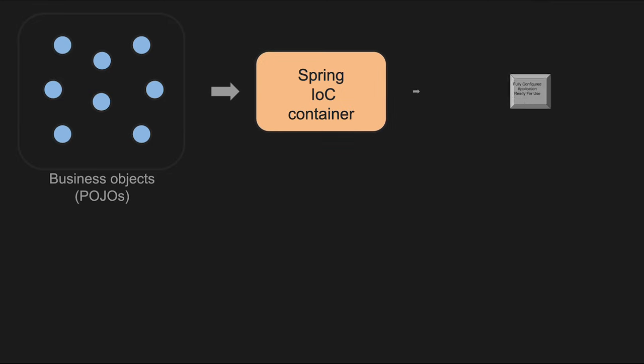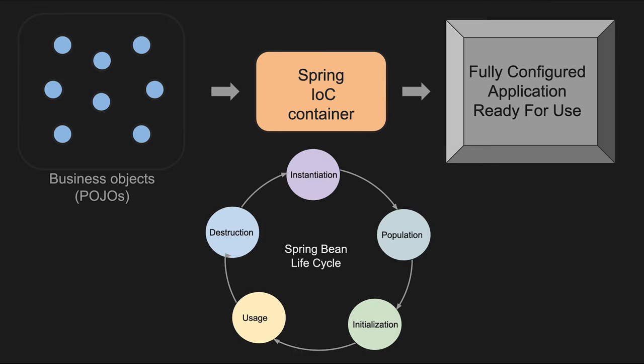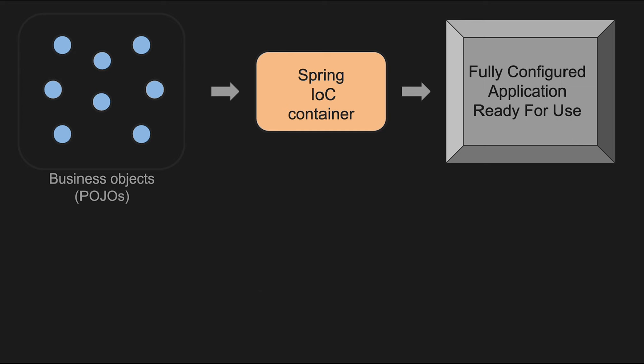Beans are essentially instances of Java classes, and these classes can be simple Plain Old Java Objects or more complex classes with business logic. The Spring IoC container is responsible for managing the lifecycle of beans: creating them, injecting their dependencies, and disposing of them when they are no longer needed.